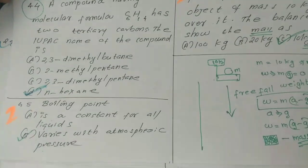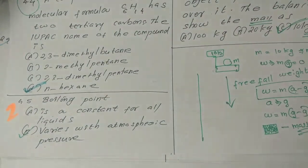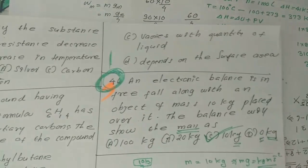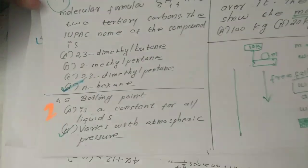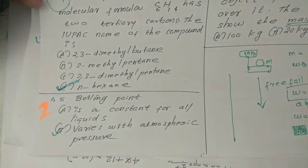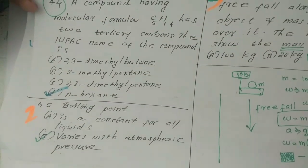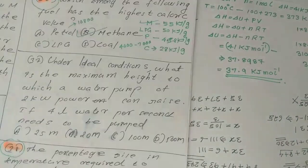MCQ: Boiling point — option A is constant for all liquids, option B varies with the atmospheric pressure, option C varies with the quantity of liquid, and option D depends on the surface area. Boiling point varies with atmospheric pressure, so the answer is option B.